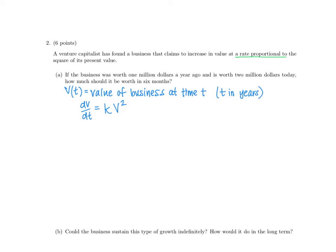We want to put everything with V on one side and everything involving T on the other, then anti-differentiate. After anti-differentiating, we get negative 1 over V equals KT plus C, with constants combined on one side. We then need to solve for V. The factor of negative 1 has to disappear and we cross-multiply or invert either side. We now have a fantastic equation for V, but it contains two constants: K and C.